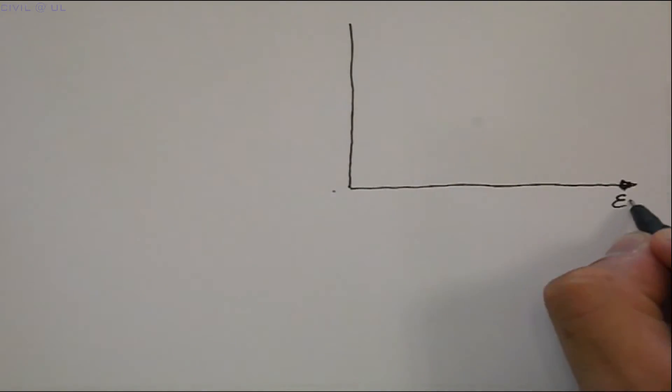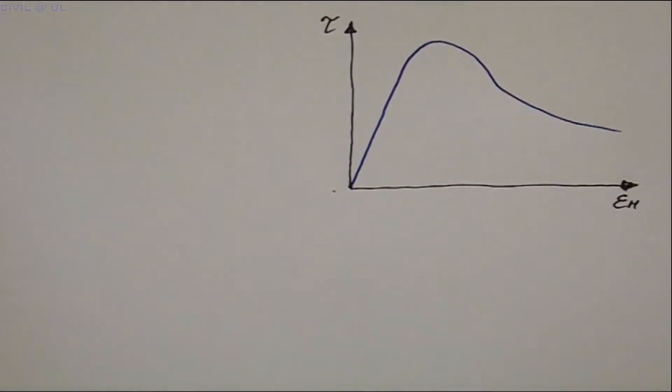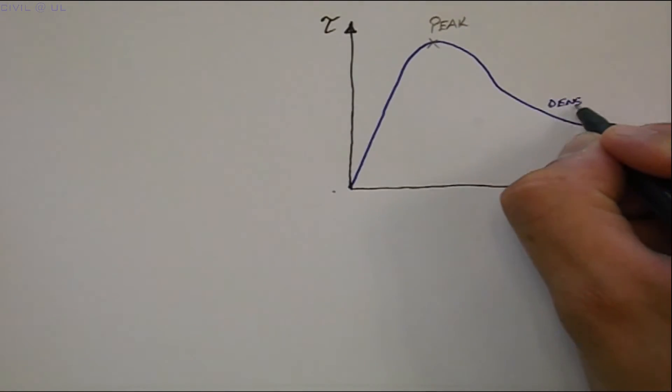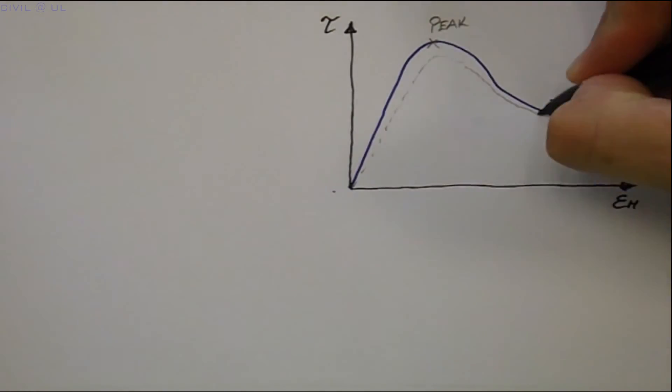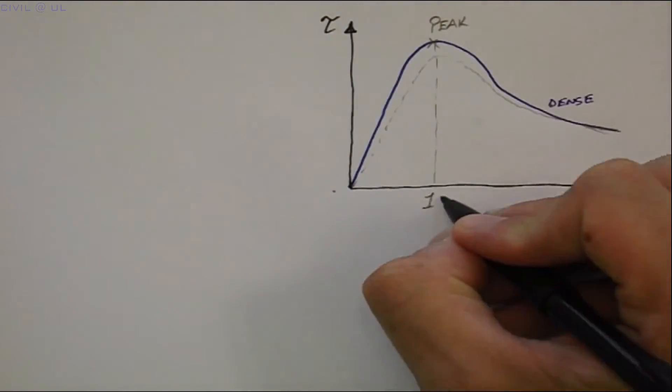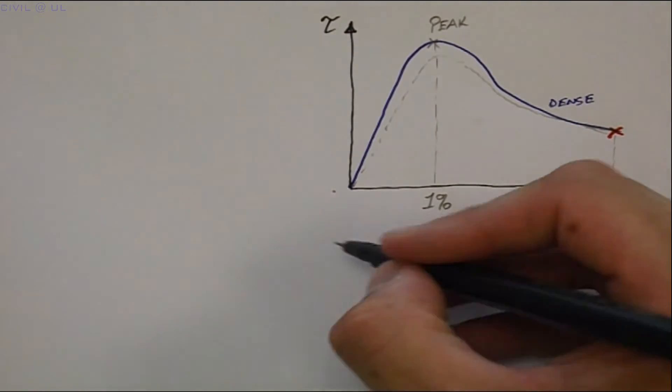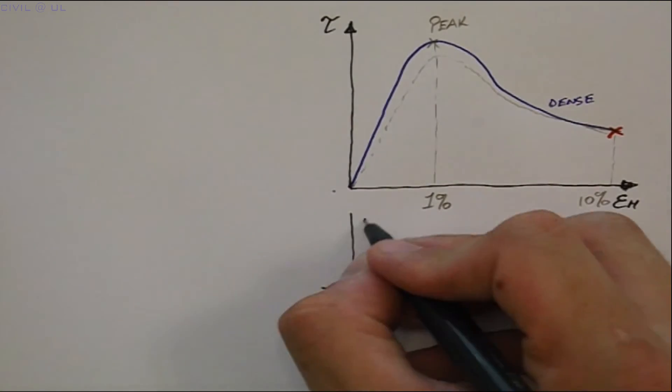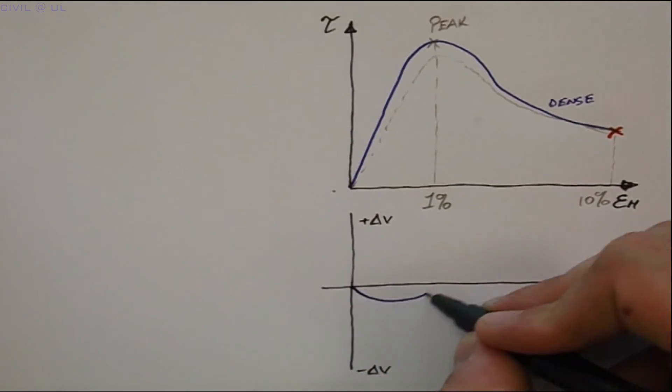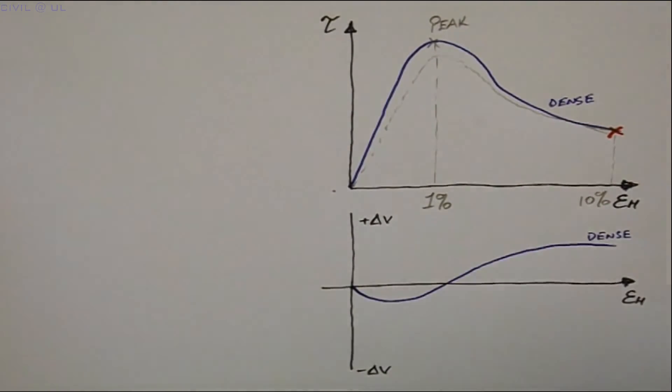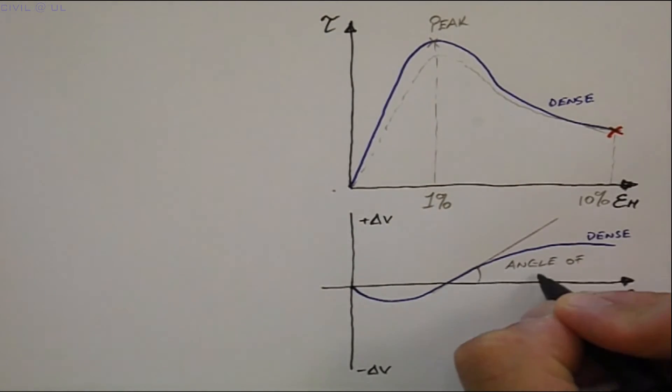We note that dense specimens having different void ratios exhibit peak shear stresses. And these occur at horizontal strains of about 1%. But this later falls off to a constant shear stress at a horizontal strain of about 10%. We also note that dense soils undergo a small initial compression, but quickly expand due to the soil particles dilating.